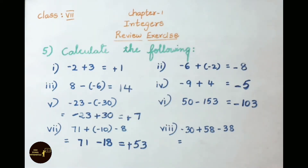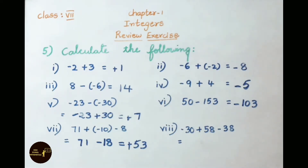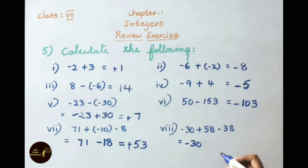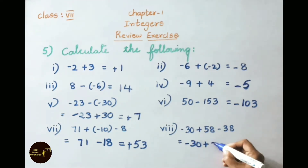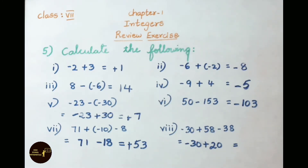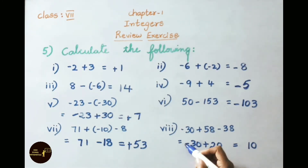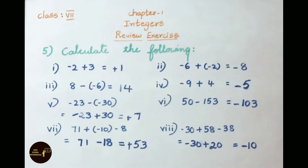See now question number 8: minus 30 plus 58 minus 38. First, 58 and minus 38 have opposite signs, so subtract: 58 minus 38 equals 20. Now minus 30 and plus 20 also have opposite signs, so subtract: 30 minus 20 equals 10. Since 30 is greatest and its sign is minus, keep the minus sign. So the answer is minus 10.